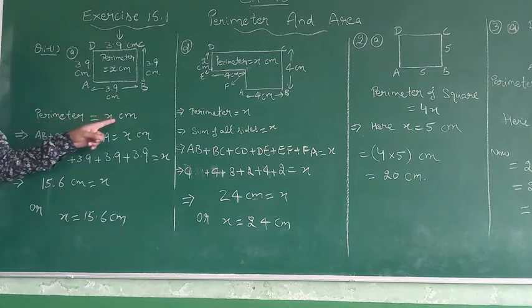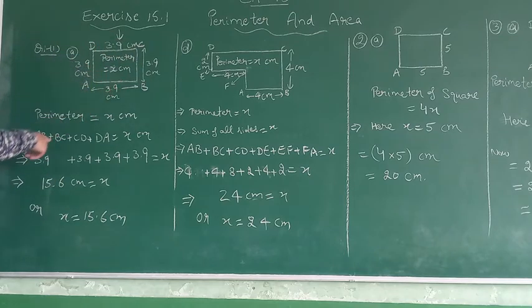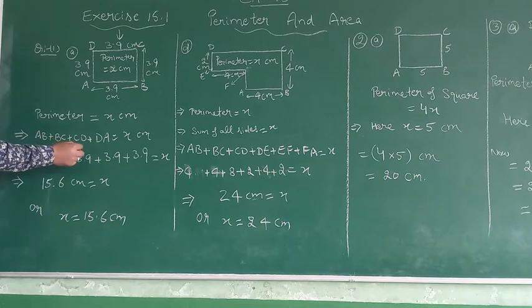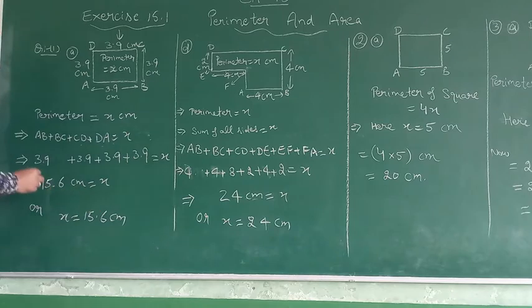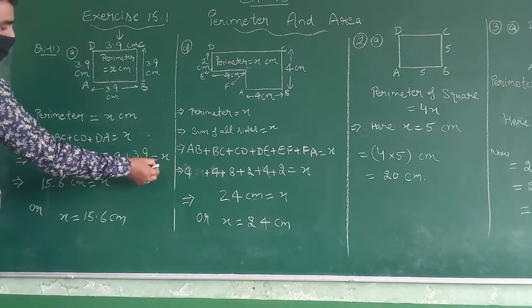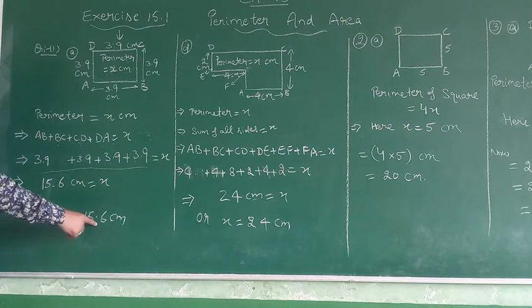So perimeter is equal to X cm. I have told you that perimeter is sum of all sides. It means AB plus BC plus CD plus DA equal to X. Now AB is 3.9, BC is 3.9, CD is 3.9, DA is 3.9. Now adding these all things, it will be 15.6 cm. We can say X equals 15.6 cm.